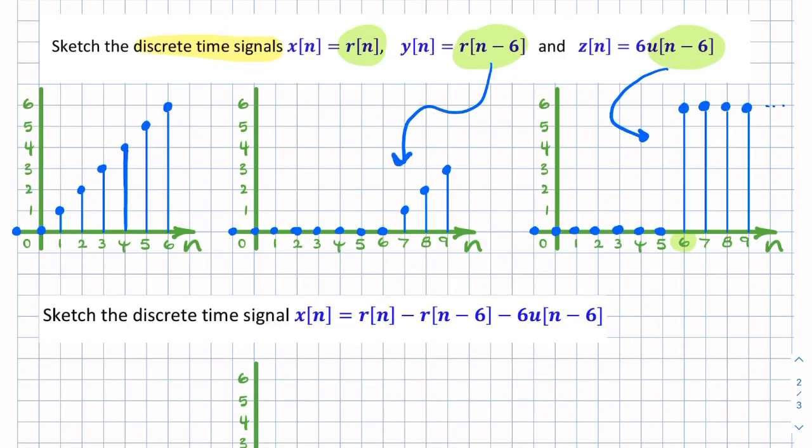So here we have a shifted step, here we have a shifted ramp, and here we have a ramp function. So those are our three signals, x, y, and z.